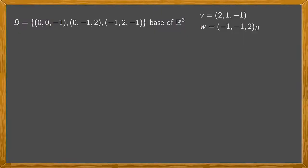We'll consider the basis B of R³ as shown here. We know it's a generator system of R³ that's formed by linearly independent vectors. Given the vector V, which is (2,1,-1), we'll calculate its coordinates with respect to basis B, and for vector W, of which we know its coordinates with respect to B, we'll obtain the expression of this vector as a vector of R³.